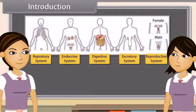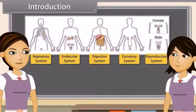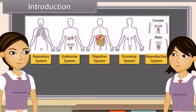Each system is specialized to do a specific function, such as nutrition, digestion, respiration, transport of materials, and excretion, respectively. In each system, all the organs work together so that the whole system can work properly. In other words, all the organs of a system coordinate with each other so that the system can work properly.